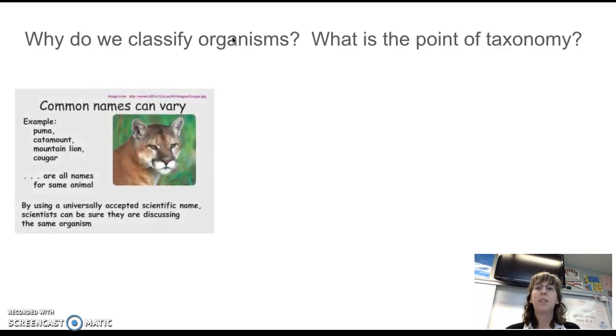One reason is it gives us a common language. For example, depending on where you are, you might call what we call a mountain lion many different names: puma, catamount, mountain lion, cougar, all of those things. But if we call it by the scientific name, which we get because of classification, if you say Puma concolor, everyone knows what you are talking about.